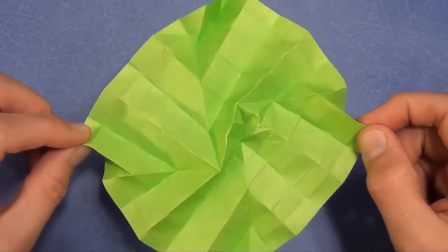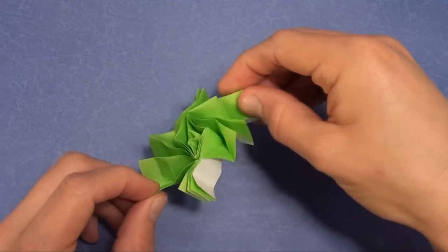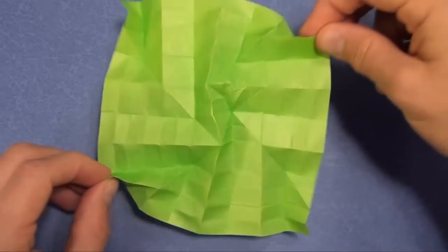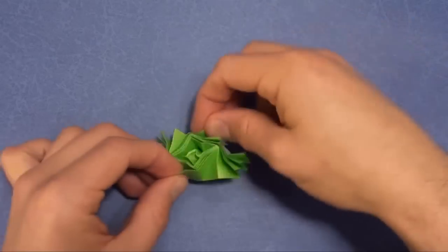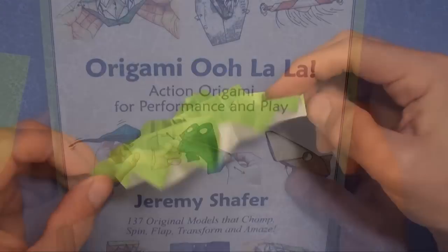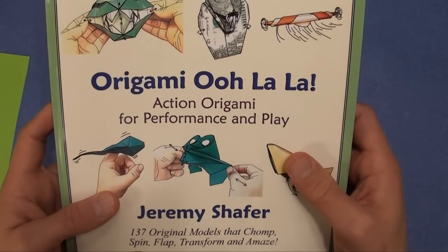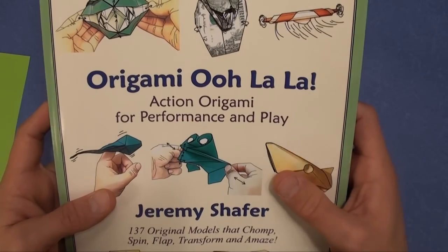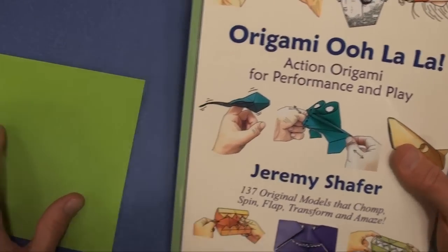Hi everyone, welcome to Jeremy Schafer Origami. I'm Jeremy Schafer and today I'm going to show you how to fold the basic ISO area flasher. This is a model that Chris Palmer and I designed in 1994. It was a joint collaboration and I recently published it in my new book Origami, Ooh La La, Action Origami for Performance and Play, available on Amazon.